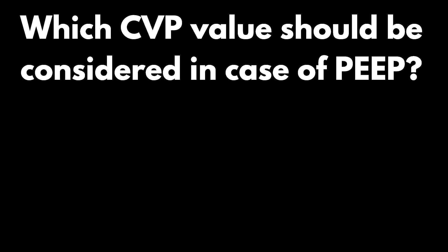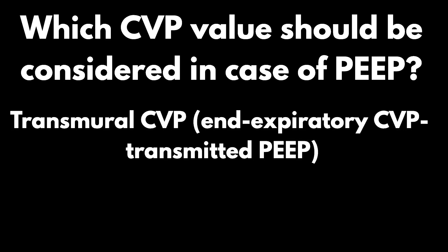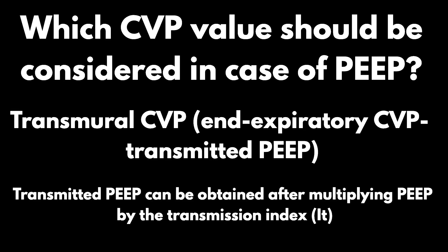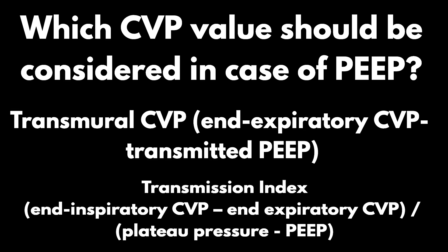Which CVP value should be considered in case of PEEP? Here, consider the transmural CVP, which is end-expiratory CVP minus transmitted PEEP, to estimate the RV filling pressure. Transmitted PEEP can be obtained by multiplying PEEP by the transmission index, calculated as: end-inspiratory CVP minus end-expiratory CVP, divided by plateau pressure minus PEEP.